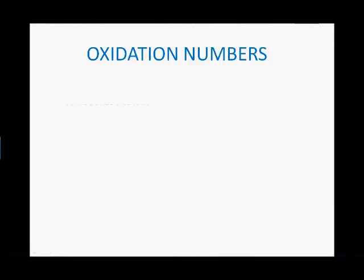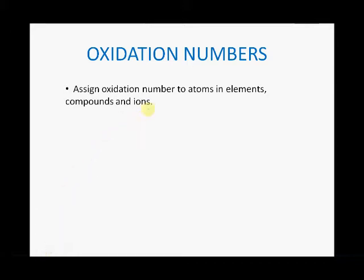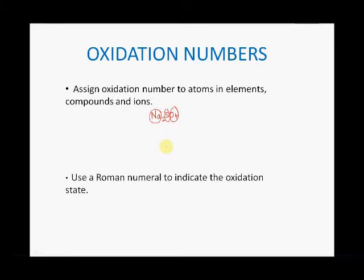I'm going to talk about oxidation numbers. The idea is to be able to assign oxidation numbers to atoms in elements and compounds. For example, if you have sodium sulfate, Na₂SO₄, you should be able to work out the oxidation number of the sodium, the sulfur, and the oxygen in sodium sulfate.